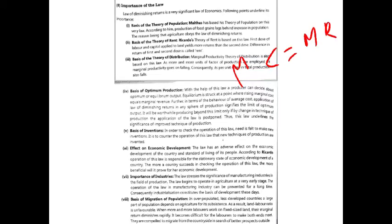Next is basis of migration of population. In overpopulated and less developed countries, a large part of the population depends on agriculture for subsistence. The law of diminishing returns is applicable because the land-labor ratio is unfavorable. When more and more laborers work on fixed-size land, their marginal returns diminish.